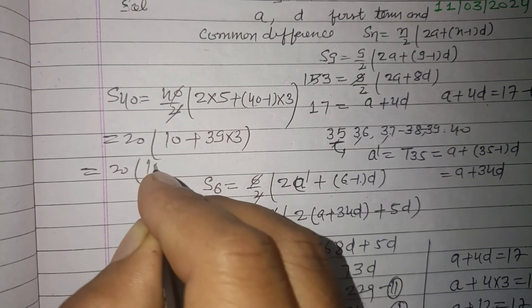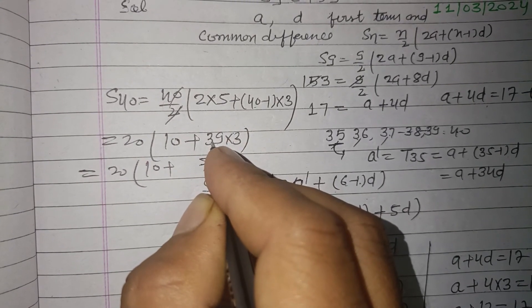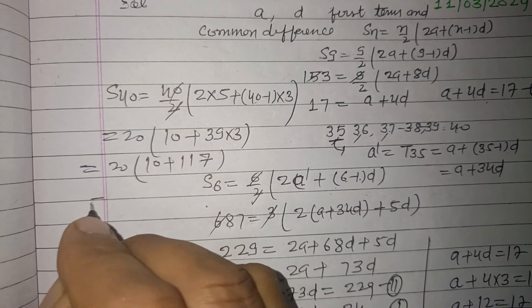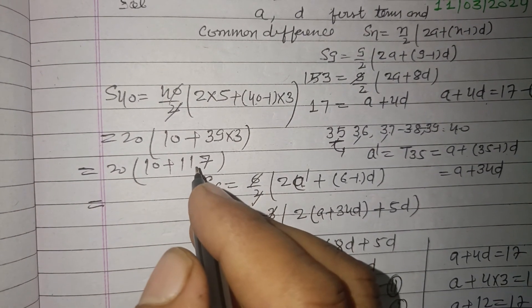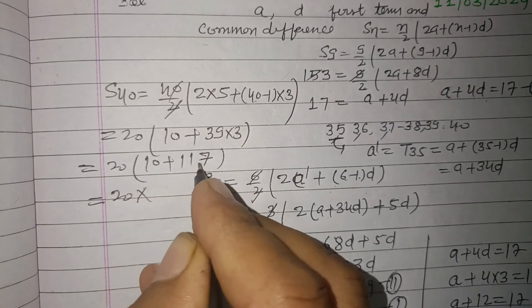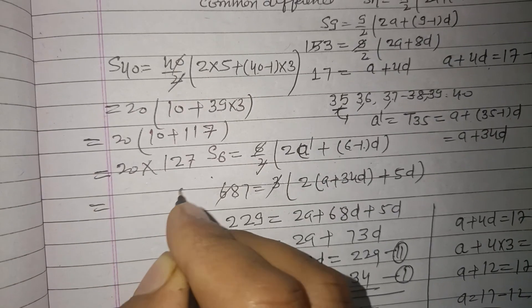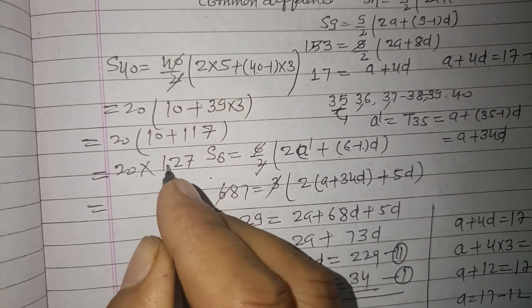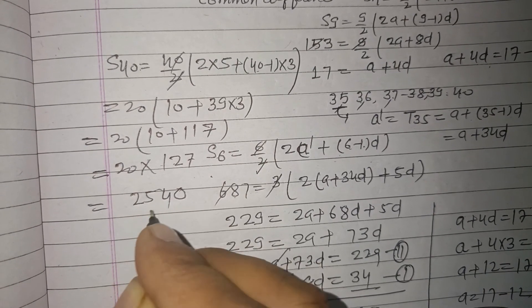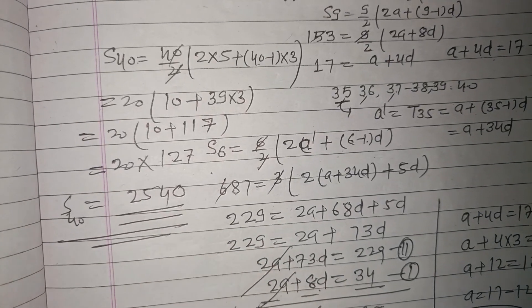20 into 10 plus 39 times 3 is 117. So 20 times 127 equals 2540. 2540 is the sum of 40 terms of the series.